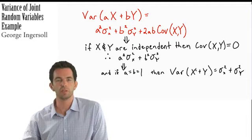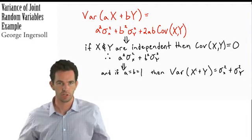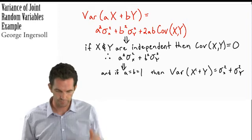If we're dealing with just two independent variables, we can just add together their variances to get the variance of the two of them combined.